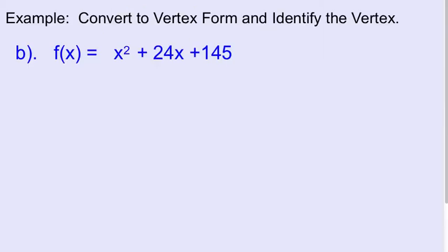Here's a second example. Convert to vertex form, identify the vertex. So we're going to first move this 145 over to the left. So we say f of x equals, or minus 145, so minusing 145 on both sides. And then we have x squared plus 24x.